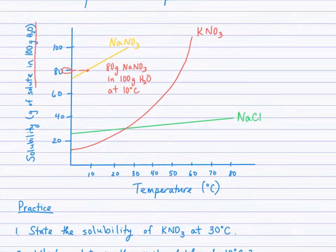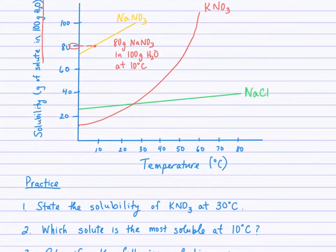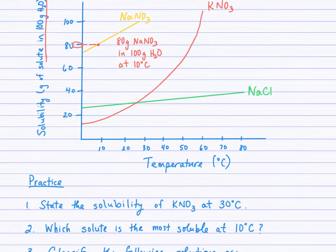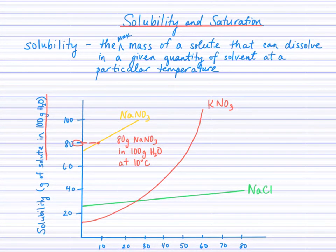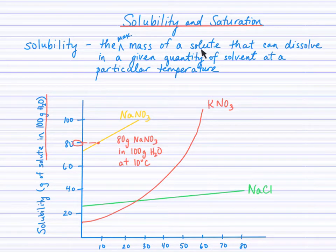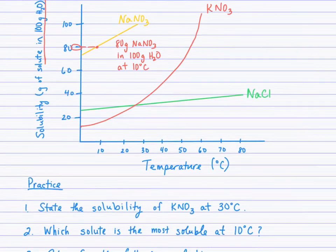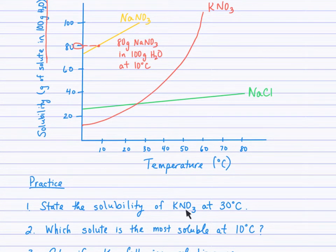There are a few questions to work through based on this solubility curve. Number one: state the solubility of KNO₃ at 30 degrees Celsius. Recalling the definition, make sure that when you state the solubility you state the maximum mass — which means be right on the line. State the maximum mass of solute that can dissolve in a given quantity of solvent at a particular temperature, and make sure to include all of those components.